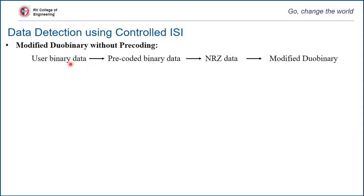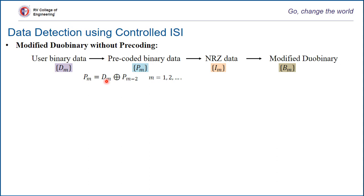With a precoder, we have user binary data, precoded binary data, and encoded data with modified duobinary, represented as dm, pm, and pm respectively. The only difference with simple duobinary with precoder is that we add with pm minus 2, unlike pm minus 1 in the case of simple duobinary. dm is taken and modulo-2 added with pm minus 2, the alternate symbol. In modified duobinary, there are two references: pm minus 1 and pm minus 2.